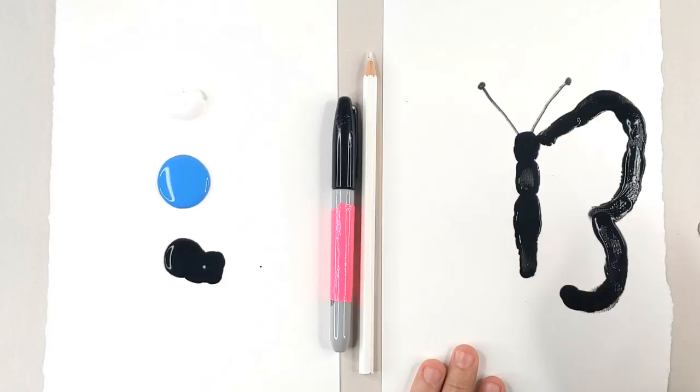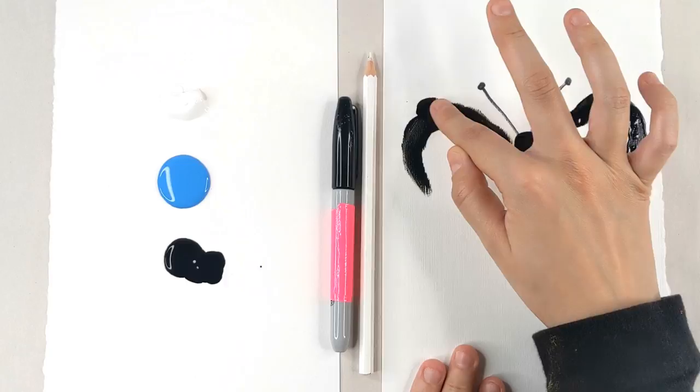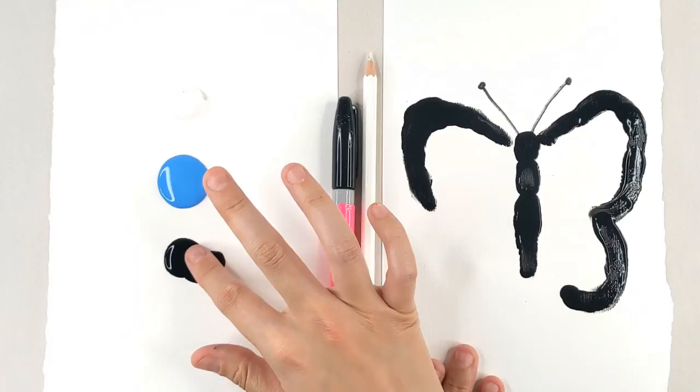So we're going to create those black outlines and then this is going to be a backwards three. Can we do it? Can we do the backwards three? It's okay if your butterfly is not perfectly symmetrical. I know that butterflies are actually in real life supposed to be symmetrical, but life happens. Life happens sometimes.